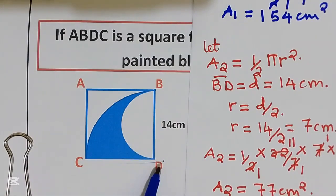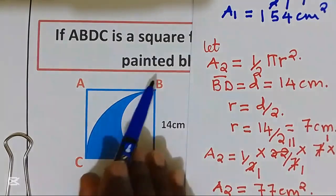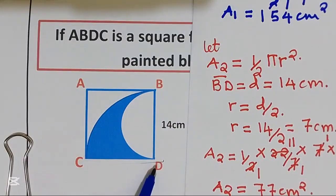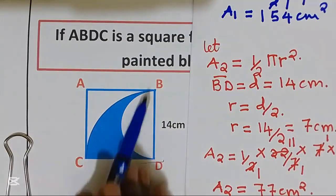Let the area painted blue be the area of our quarter circle B, C, D, take away the area of our semi-circle B, D.